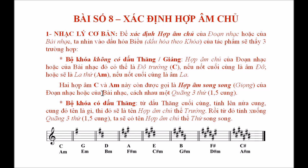Hai hợp âm đô trưởng và la thứ này còn được gọi là hợp âm song song hay là giọng song song của tác phẩm, được quy định cách nhau một quãng ba thứ bằng một cung rưỡi.